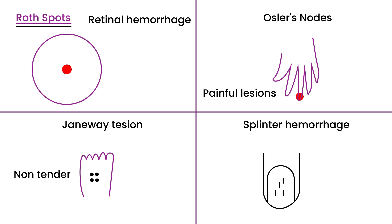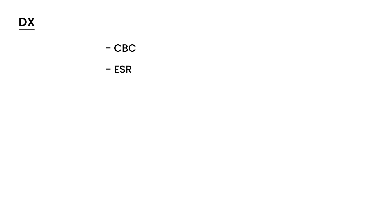When somebody has these symptoms and characteristic physical exam findings, what are the diagnostic tests? There are four main ones. The first two are CBC and ESR. The CBC looks for anemia; these are non-specific tests but always ordered in the diagnostic workup. ESR — erythrocyte sedimentation rate — is a non-specific indicator of inflammation and will be elevated in endocarditis.